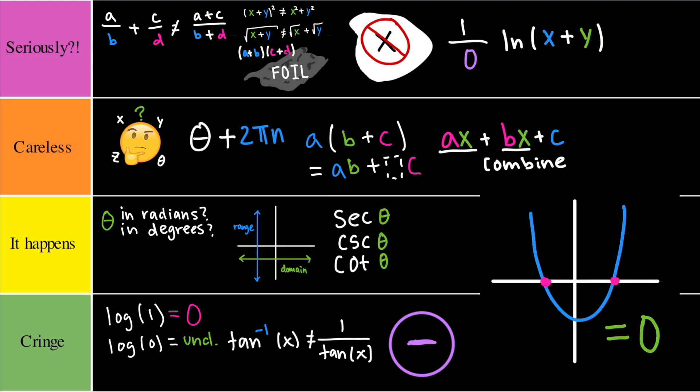Finding roots incorrectly would depend on how the mistake was made. Some common missteps are forgetting that they might have two solutions, such as x² equals 9 with solutions x equals 3 and negative 3, making arithmetic errors, or not using the quadratic formula correctly. Now this one would have to go into the careless tier.